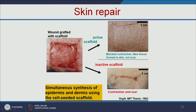In this example, a wound grafted with an active scaffold shows no contraction — new tissue forms and there is no scar formation. But when you don't use the scaffold, there is scar formation due to contraction of the skin.